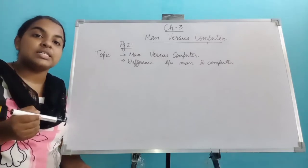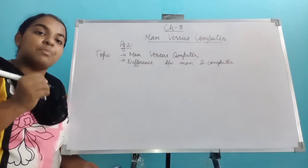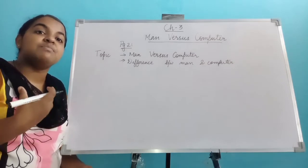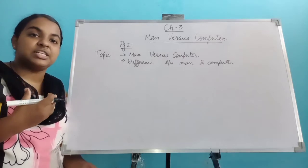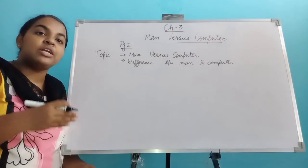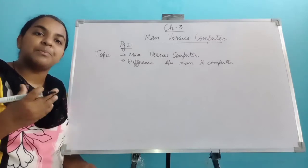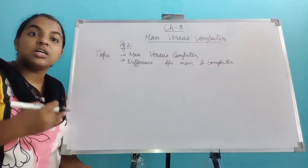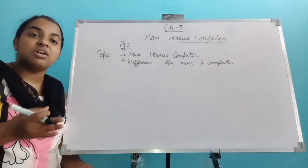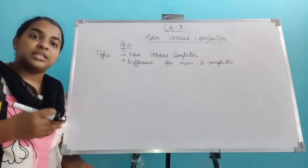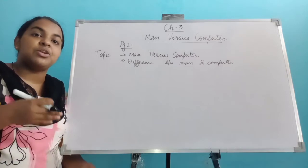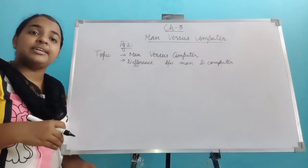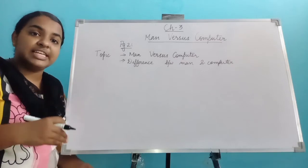A man has made the computer, so how can a computer be better than a man? The boy is asking: if man was not there, computers would not have come into this world. According to his perspective, man is better than a computer because if man had not created the computer, it would not exist, and we would not have used it to make our work easier.